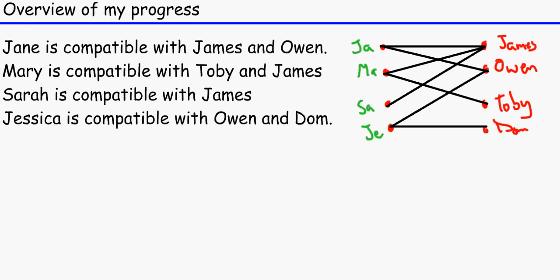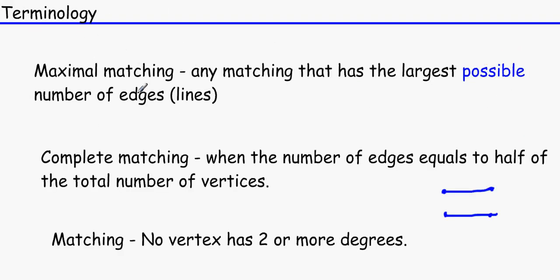So what we do is we have an initial matching in order to make this maximal matching. And the maximal matching is basically any matching which has the largest possible number of edges. Basically it's a step down from complete matching. And a complete matching is just basically when the number of edges equals half of the total number of vertices.